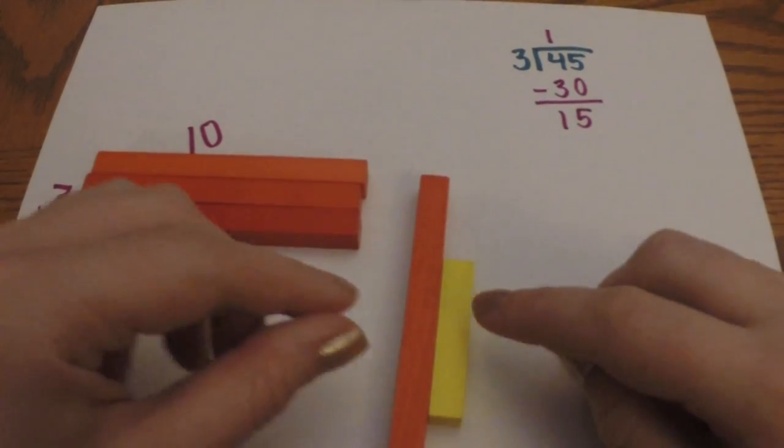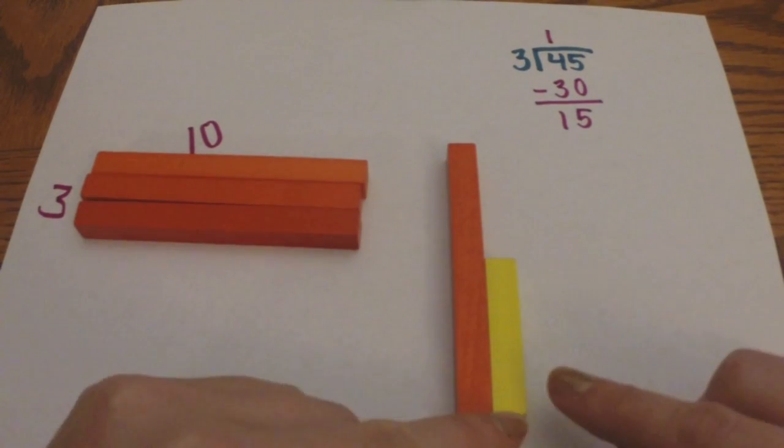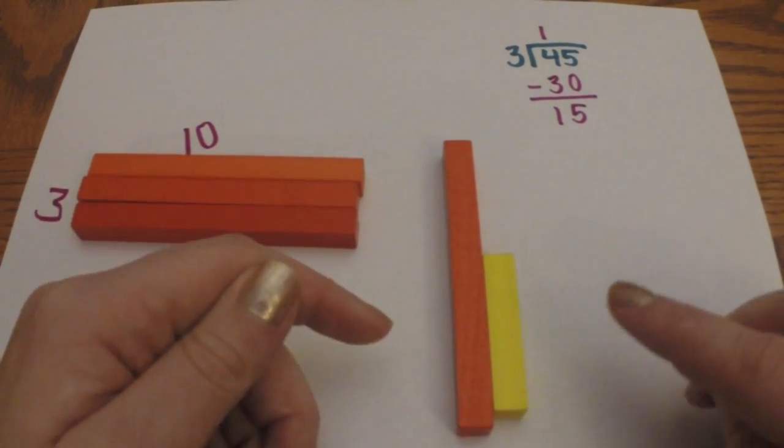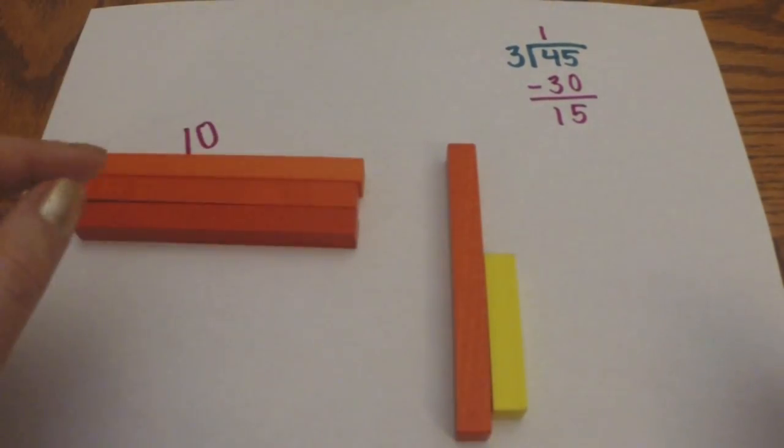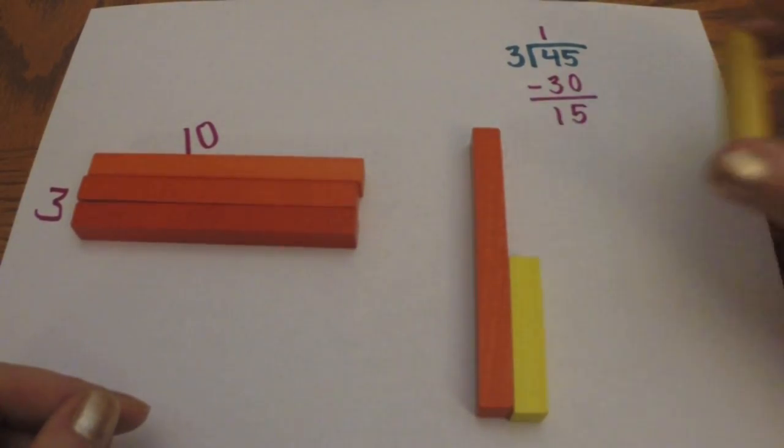And so what we want to do is we want to see, can we make another rectangle that is three by ten? No, because we only have one left. So let's see if we can trade in our Cuisenaire rod for a different one so that we can make another rectangle that is three by something. And if you look, you can see that two five rods equal up to ten.